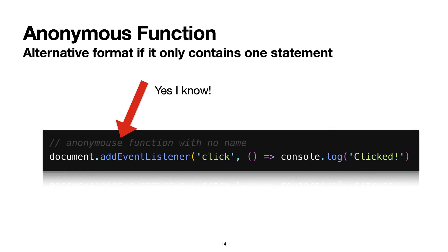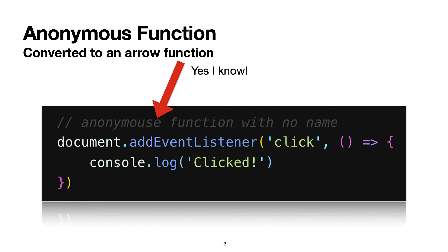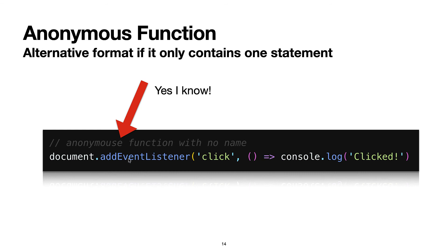You can actually write this in an alternative format, but only if you have one statement. This one just prints something out to the console. So if you have a similar type of anonymous function in an event listener, you can write it like this: document.addEventListener — this is adding it to the entire document — when someone clicks, we want to log something to the console, that's it. Again, we're saving from having to write the word function and the opening and closing curly braces. Arrow functions are pretty neat, and there will be skill-building exercises and maybe an assignment that'll have you convert some functions over to arrow functions.